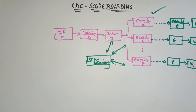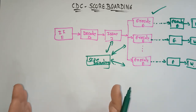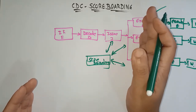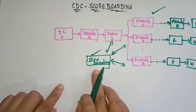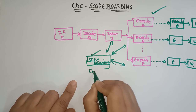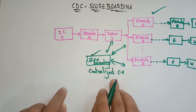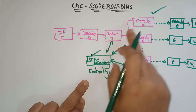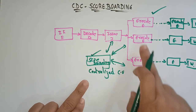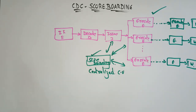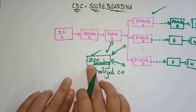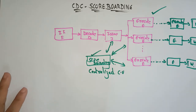To control the correct routing of data between the execution units and registers, the CDC used a centralized control unit known as the scoreboard. This scoreboard is the centralized control unit. It controls the correct routing of data between the execution units and the registers — whether the routing of data is going correctly or not is monitored by this control unit, generally called the scoreboard.